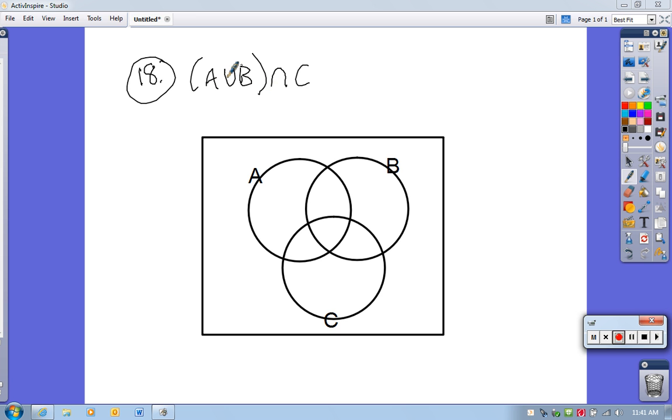Notice what we have to do is shade some regions here, and we want the intersection of A union B and C. So it's basically where this overlaps with that. Let me do this a little piece at a time here. Make this a little bigger. That might help.